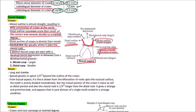Two distinct buccal cusps are seen with a developmental depression in between — it is not a developmental groove but a developmental depression. The two cusps observed are the mesial cusp, which is larger, and the distal cusp, which is smaller. The mesial cusp is the mesiobuccal cusp and the distal one is the distobuccal cusp.